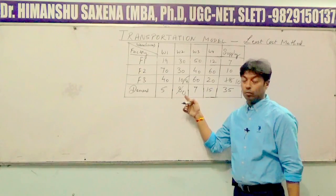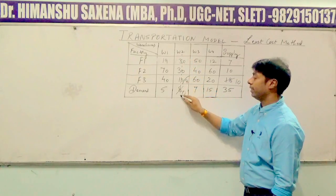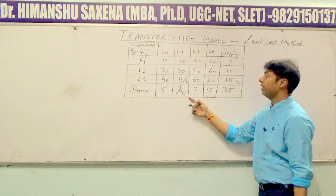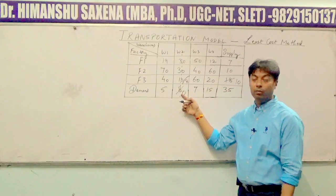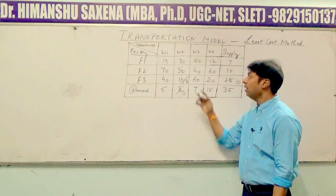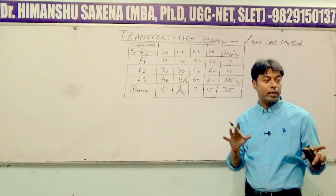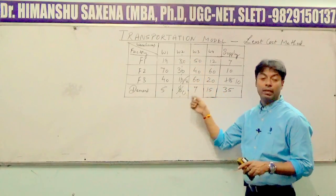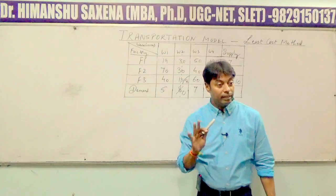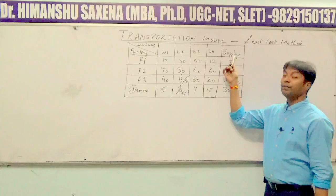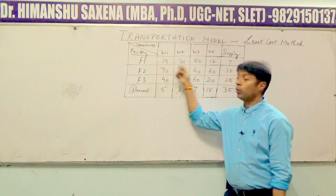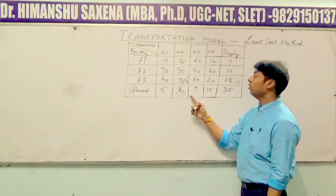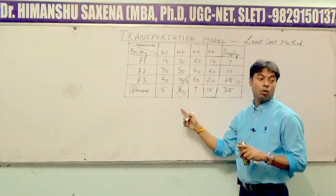Remember: if the demand turns 0, the entire column will be deleted — crossed out using a dotted line or pencil. The entire column for warehouse 2 is deleted because its demand has been fully satisfied and it requires no more units. Conversely, if the supply turns 0, then the whole row will be deleted. Here, the demand turned 0, so the whole column is deleted.